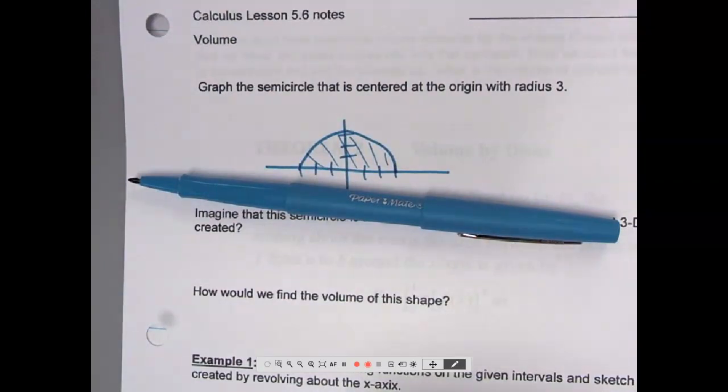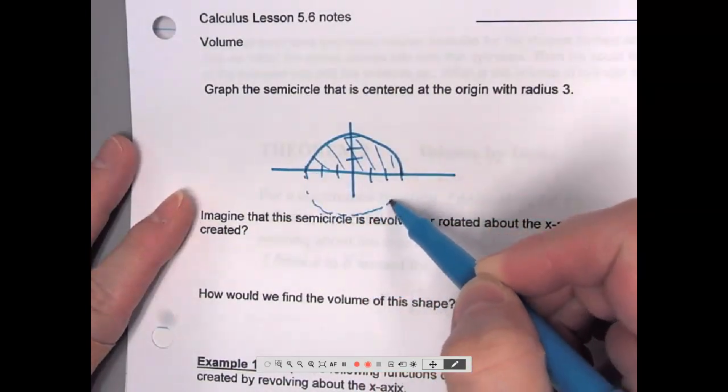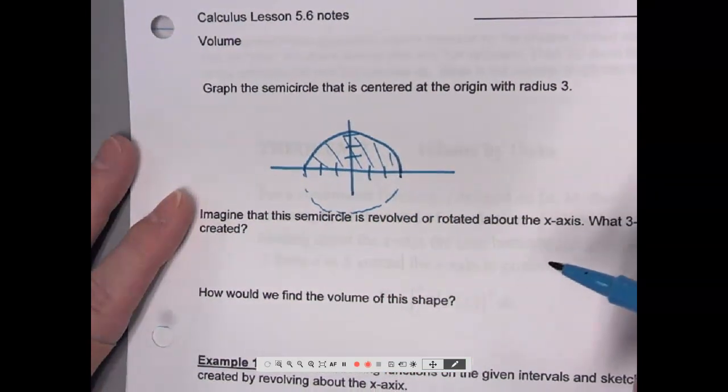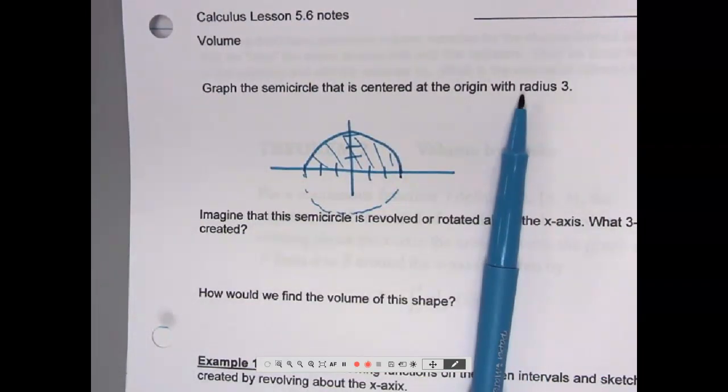It would be a solid sphere. So what I would end up with is a 3D, I don't know how to make a sphere look 3D, but anyway, it would be a sphere. Not just a 2D circle, but a 3D sphere.